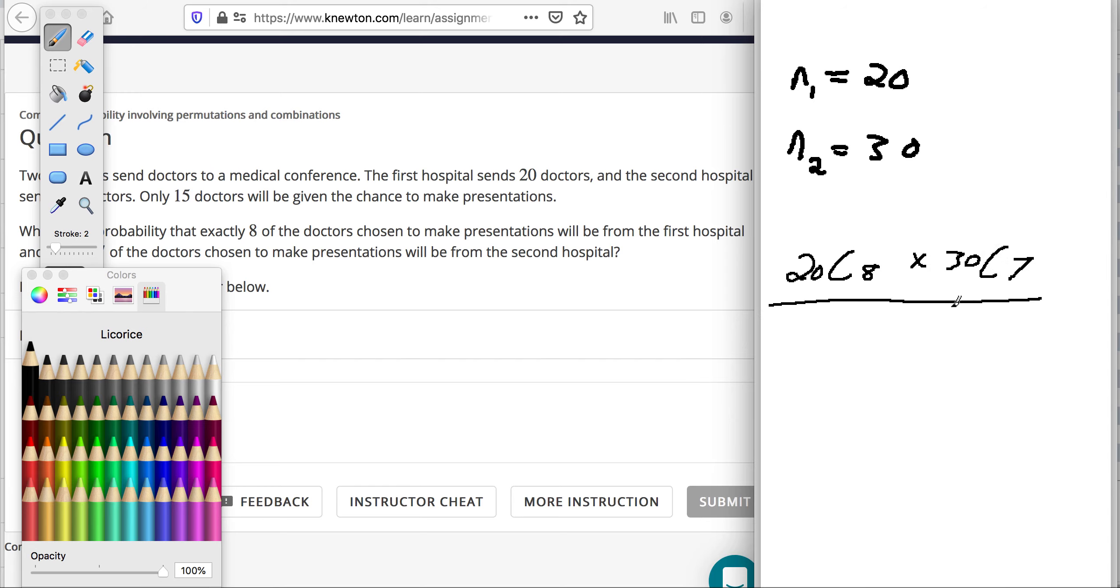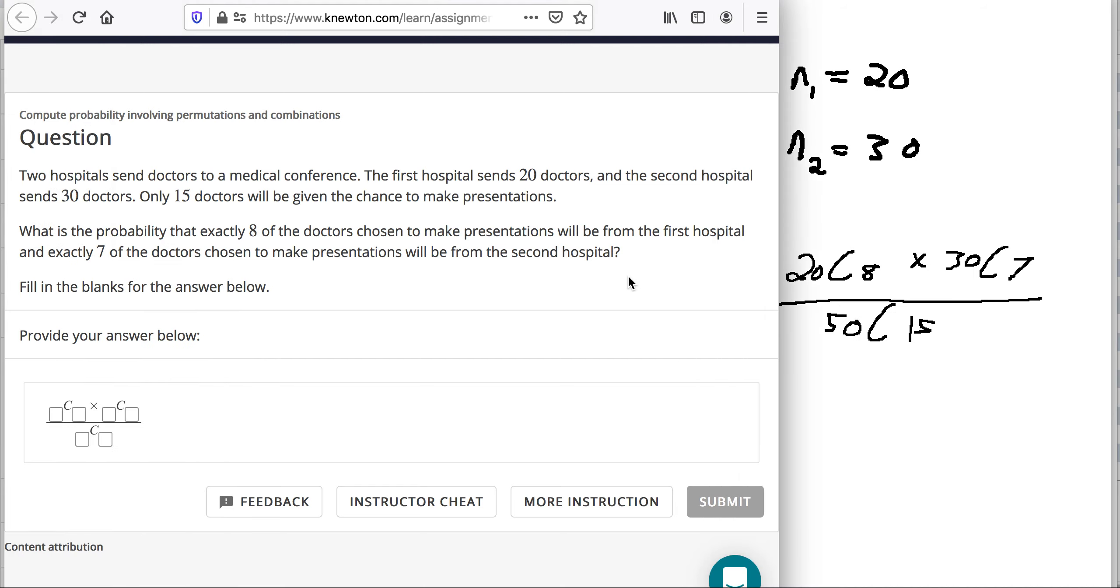And then you want to divide that by the total number of possible ways of choosing those 15 doctors. That means you're not picking eight from the first, seven from the second. You could be doing nine from the first, six from the second, or ten from the first, five from the second. So what you want is you've got 50 doctors, and you want to find out how many different ways you can choose 15 of them. Because the probability is found by the amount you're interested in, which is eight from the first, seven from the second, divide by the total. So there's 50 choose 15 different ways of doing the total.